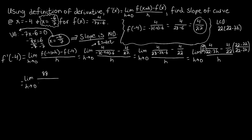For the second fraction, we distribute the 4: 4 times 22 is 88, and 4 times negative 7h is negative 28h. This is over the same common denominator. So the numerator of our combined fraction is 88 minus the quantity 88 minus 28h, all over 22 times 22 minus 7h, and this entire expression is over h.